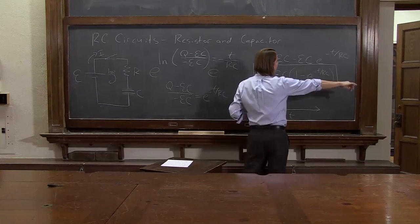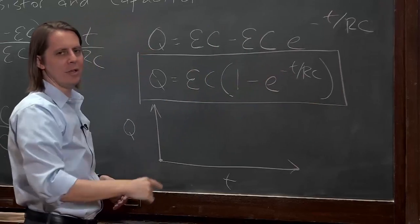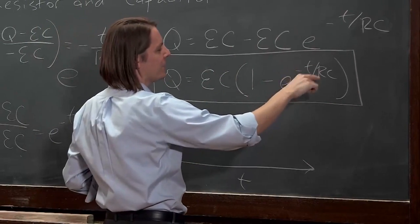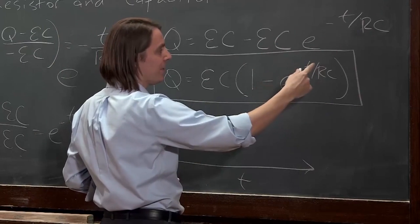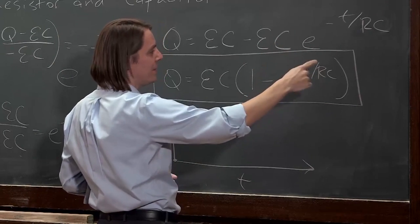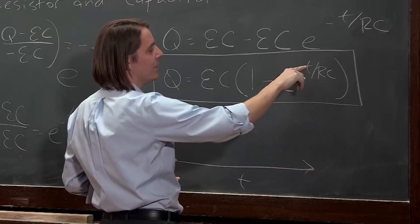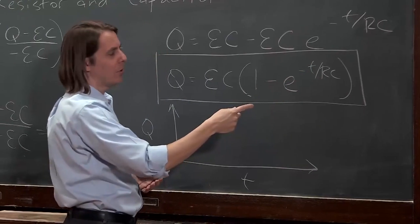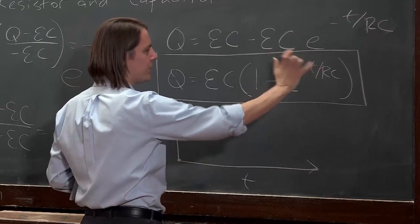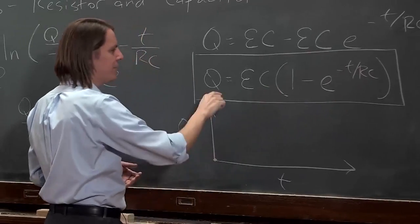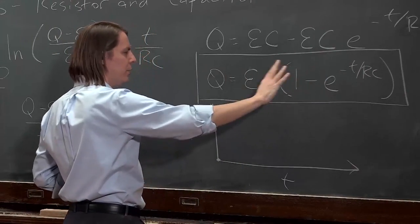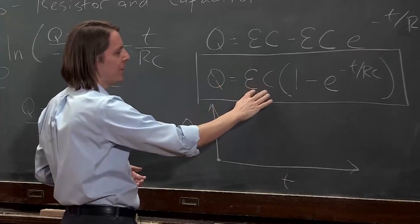If we wait a really long time, let T be really big. Let it be infinity. E to the minus something is one over E to the something. E to the infinity is big. One over E to the infinity is zero. So basically, this is an exponential function that goes to zero at really large time T. So if this goes to zero, this is one, then sure enough, at a long time, this goes to what we call Q max, the maximum charge of the capacitor.